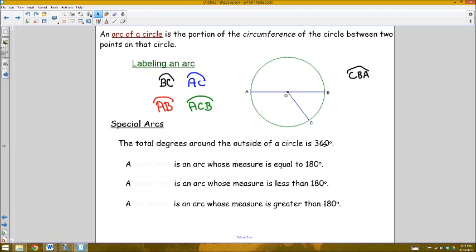So one kind of special arc is one that has a measure of 180 degrees, which is basically making up half a circle. So if there's 360 in the entire circle, 180 would make up half a circle, and that's called a semicircle. An arc whose measure is less than 180, not taking up half a circle, is called a minor arc. And an arc whose measure is greater than 180 is a major arc.